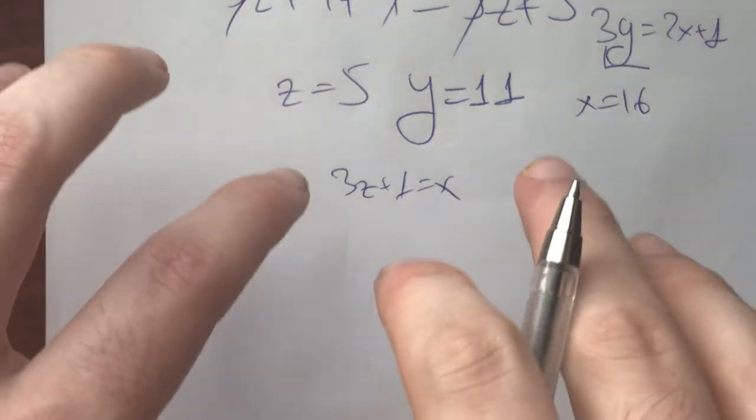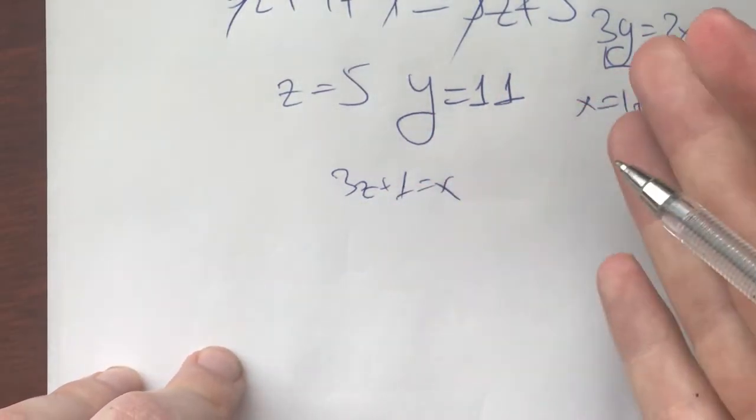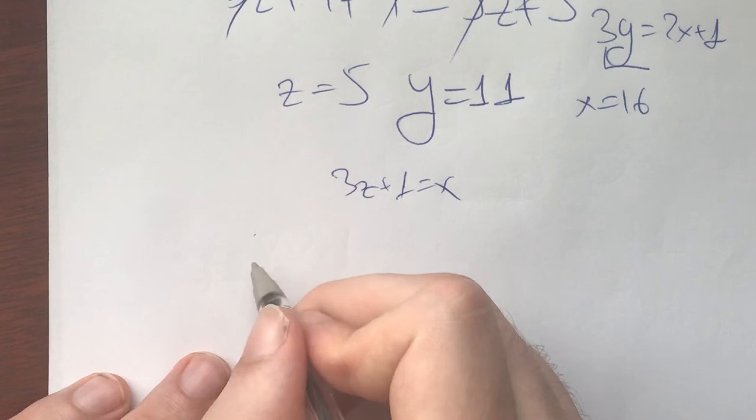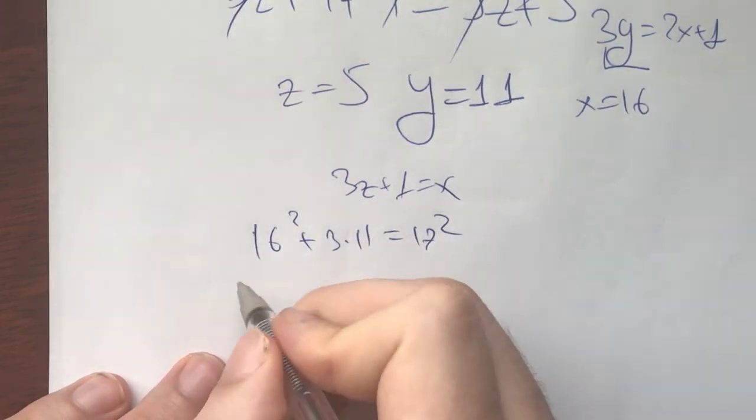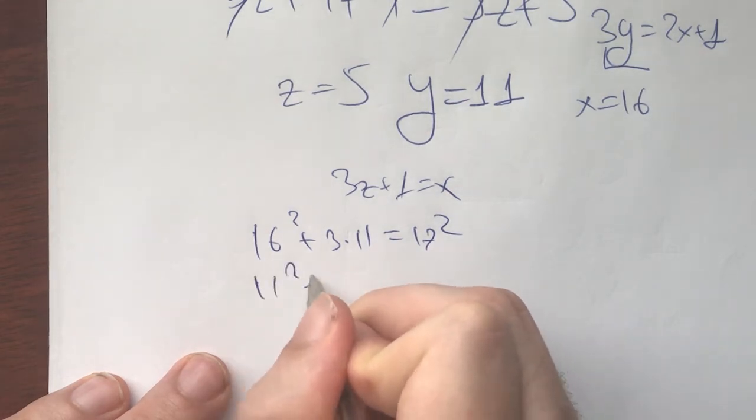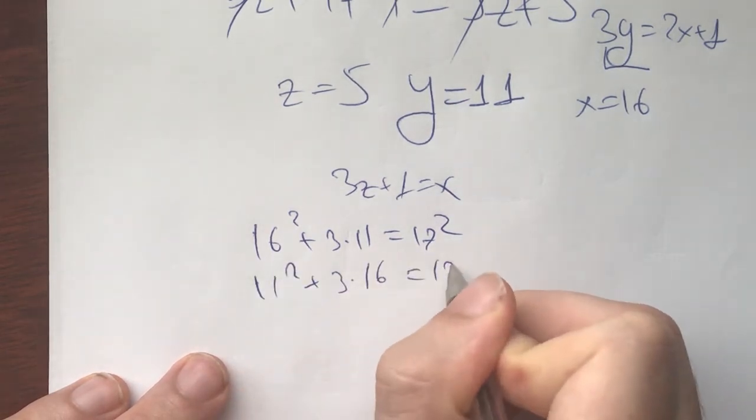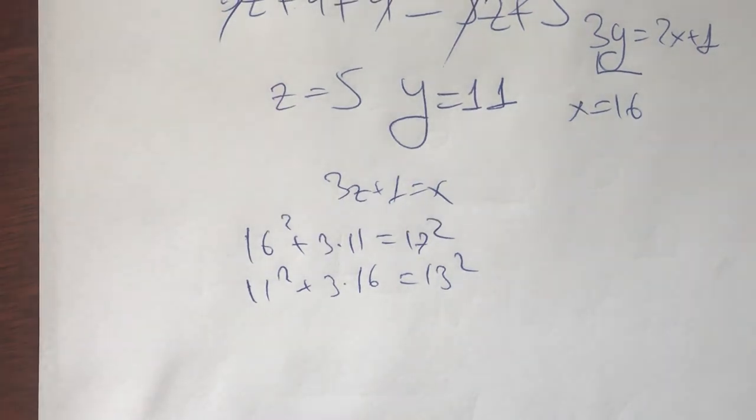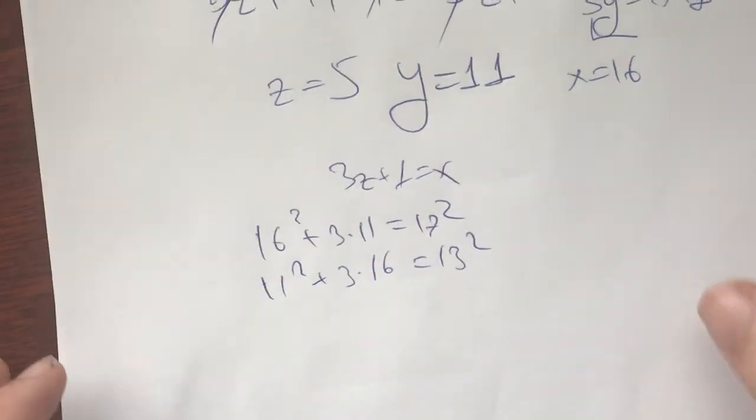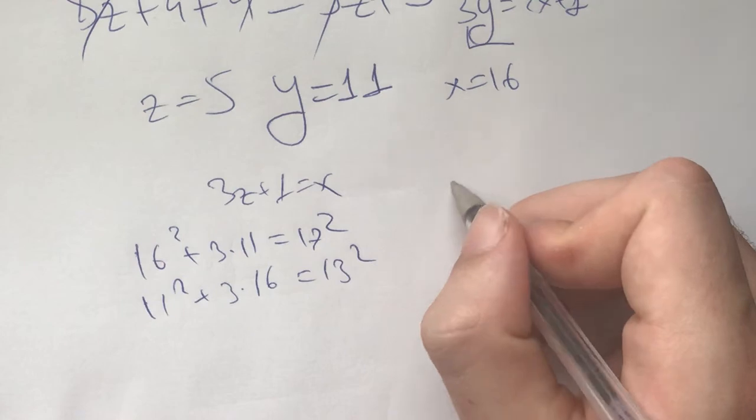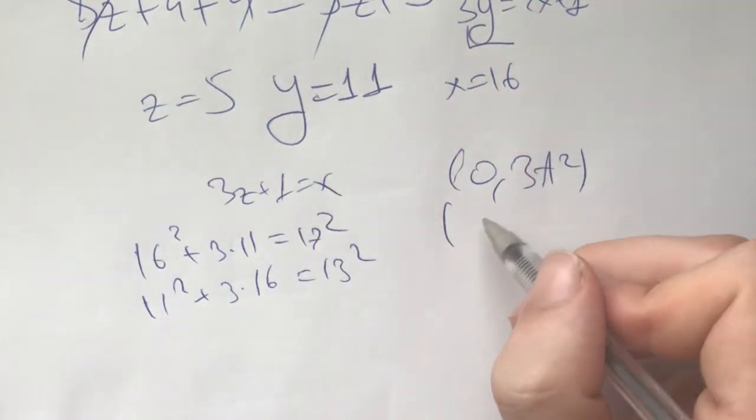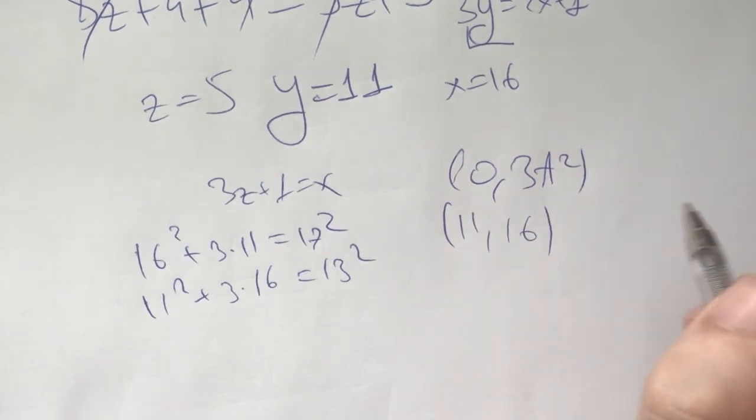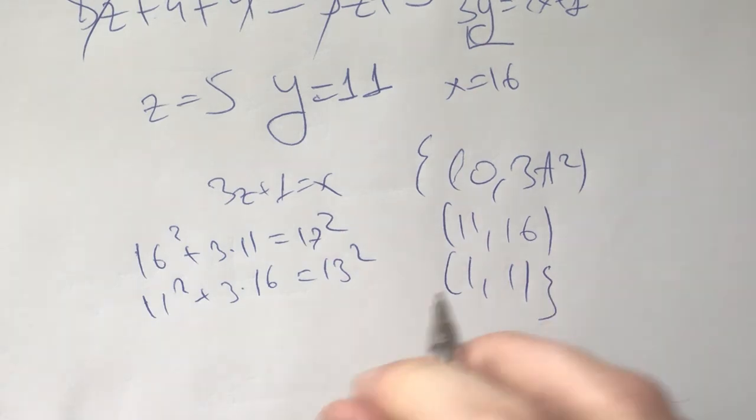And now let's double check to make sure that we haven't made any mistake algebraically. We haven't made any mistake because we have 16²+3(11) = 17². And we have that 11²+3(16) = 13², both of which are true. And now this gives us all our answers really. We had 0 and 3t². We had the answer 11 and 16. And these are all the answers with permutation.